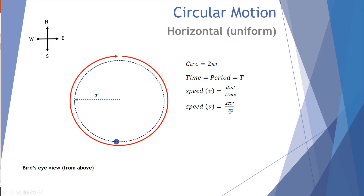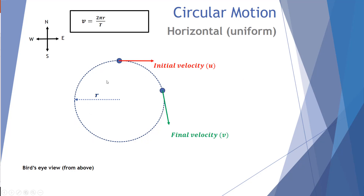Now this diagram is from a bird's eye view — this is a horizontal plane, an object moving around a circular path on the ground. So here's our first equation: speed equals 2πr over T, where r is the radius and T is the period in seconds of one revolution or cycle.